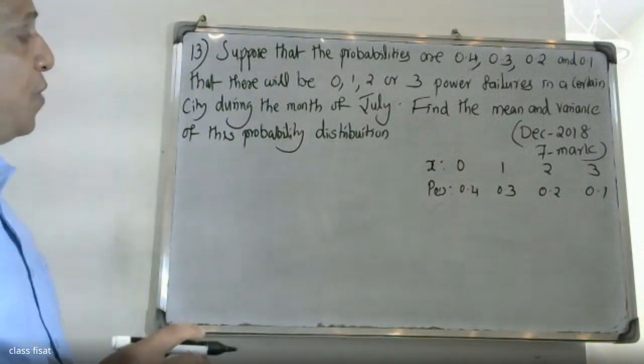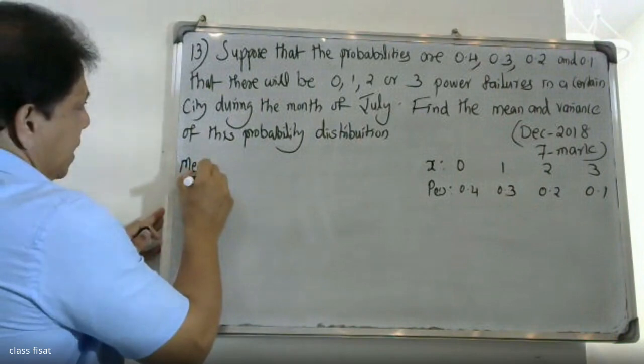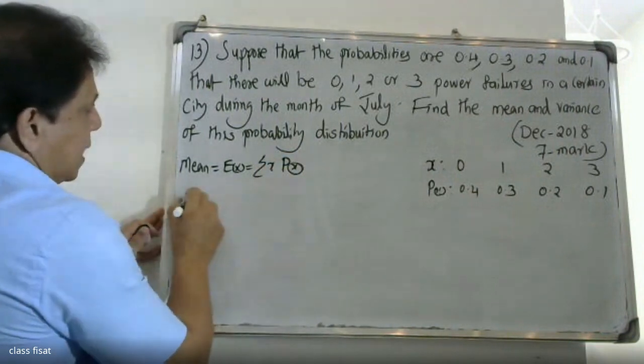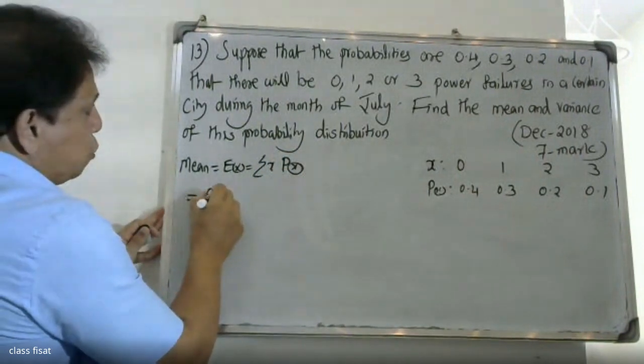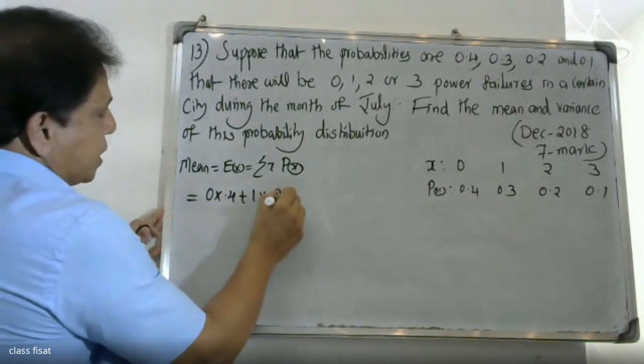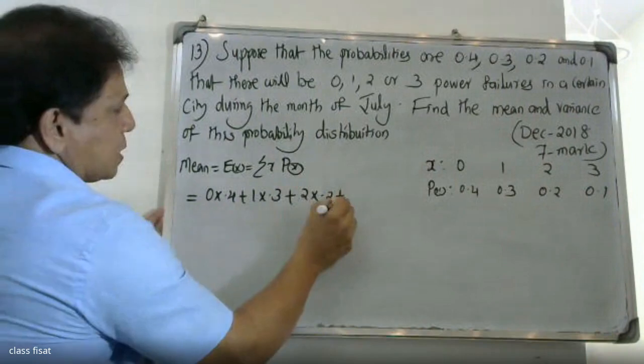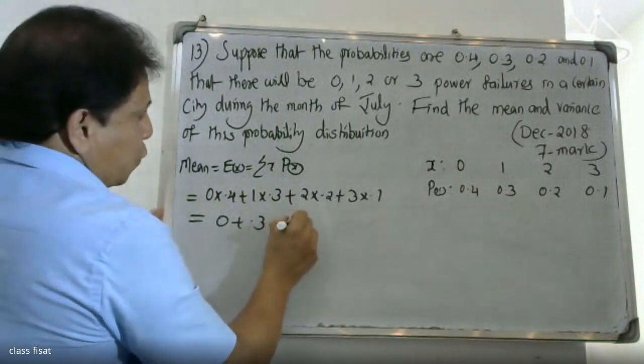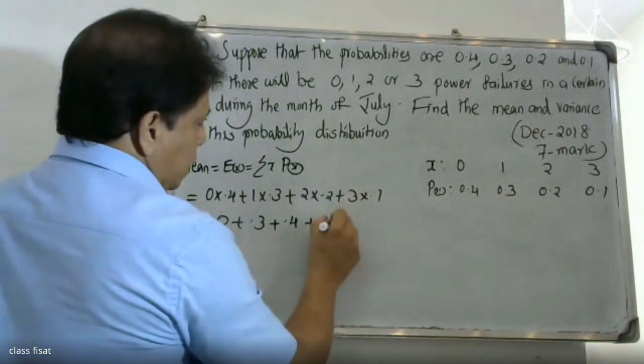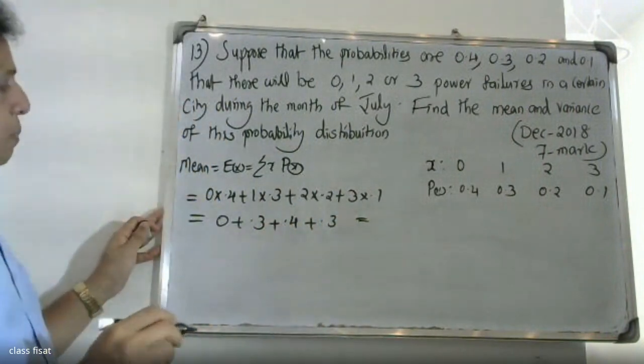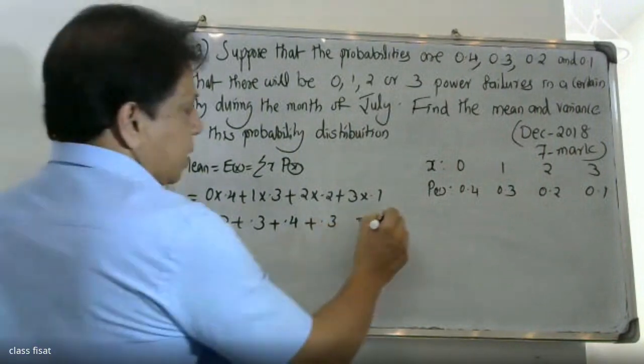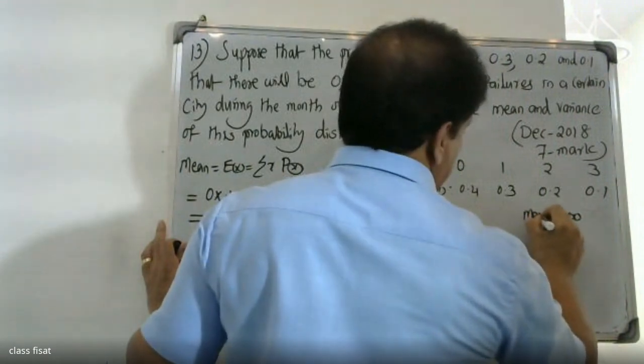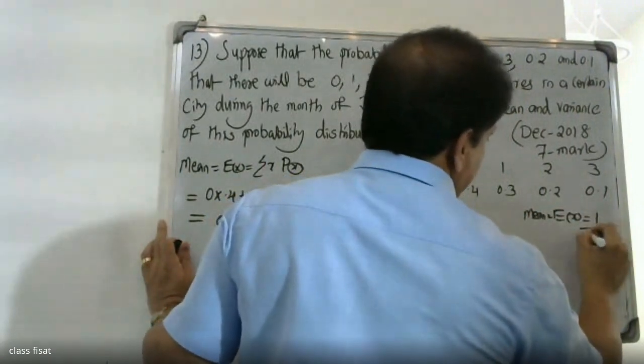Now to find the mean and variance, the mean of the probability distribution is the expectation of X, which equals sigma X times P(X). That is, 0 times 0.4 plus 1 times 0.3 plus 2 times 0.2 plus 3 times 0.1. This equals 0 plus 0.3 plus 0.4 plus 0.3, which gives us the mean value. The expectation of X equals 1, so the mean is equal to 1.